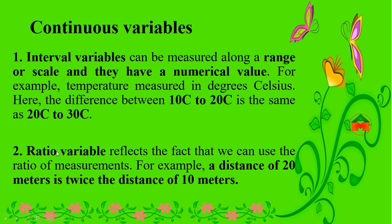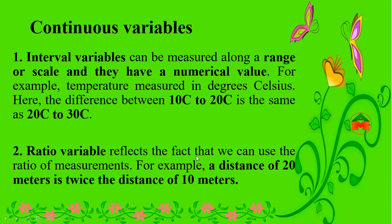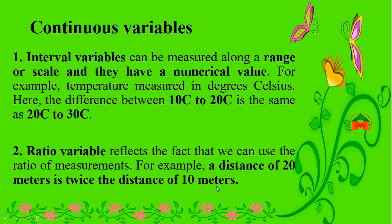A ratio variable is another type of continuous variable. It reflects the fact that we can use the ratio of measurements. For example, a distance of 20 meters is twice the distance of 10 meters.